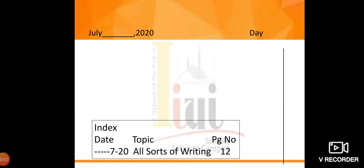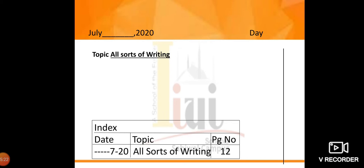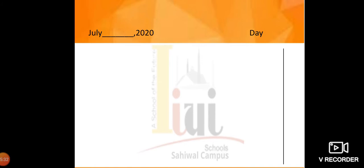Now open your notebooks. Write the date and day on the top, draw your margin lines, and write your index. Write down the topic — 'All Sorts of Writing' — and underline it. In your index, write the date, topic 'All Sorts of Writing,' and page number 12. Let's begin.